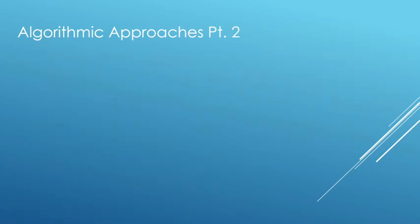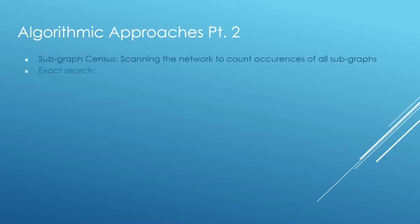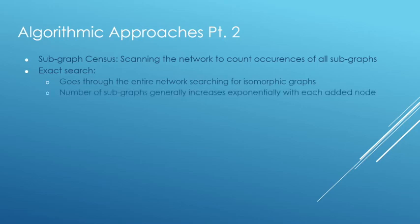So the second common step is subgraph census or a way to count the instances of a specific subgraph. There are several methods to do this, ranging from exact searching to sampling or even a technique called mapping. So exact search methods will go through the entire graph checking for isomorphism, which results in an extremely time consuming process.